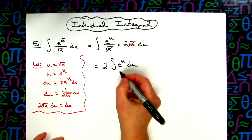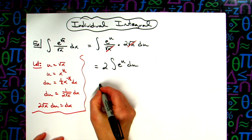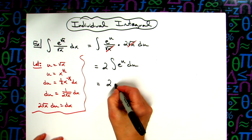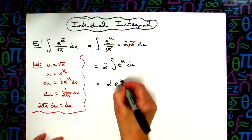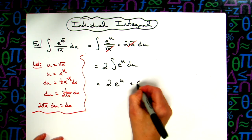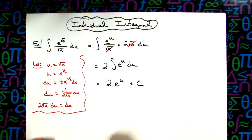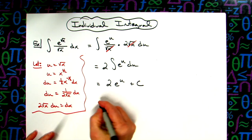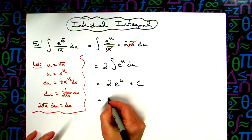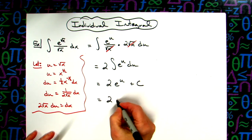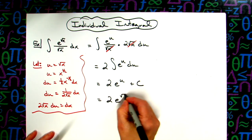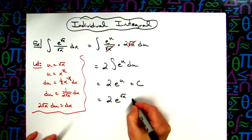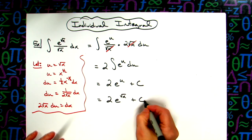Integrating e to the u is e to the u. So I will have 2e to the u plus C. And then I can replace my u with what it equals, which is the square root of x. So then I'm going to have a final answer of 2e to the square root of x plus C.